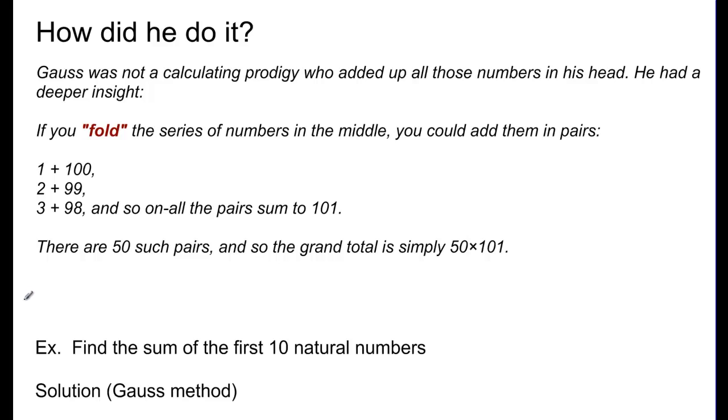So, then he asked himself, well, how many pairs of these are there? And halfway between 1 and 100 is 50. So, there are 50 pairs that all add to 101. So, he simply said, what's 50 times 101? And he got 5,050.